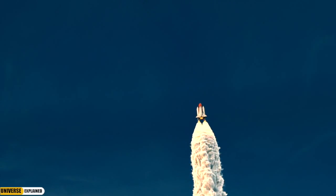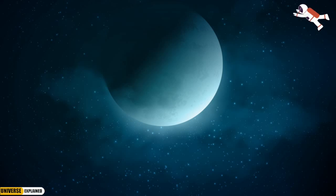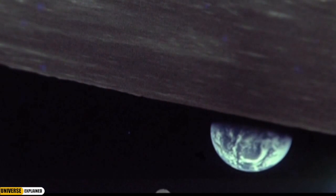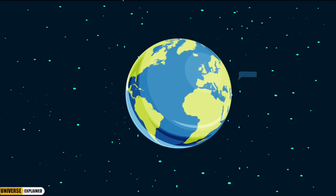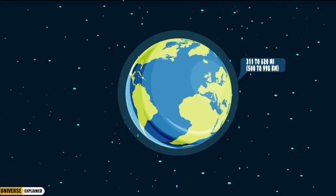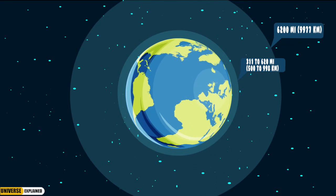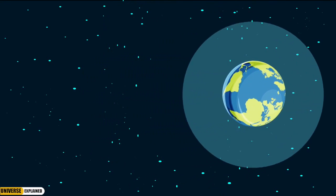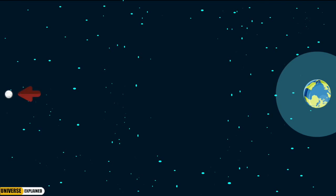No human except the 24 astronauts who visited the Moon in 1969 has ever traveled to this layer. This layer begins at 311 to 620 miles and ends at around 6,200 miles above sea level. The Moon is still hundreds of thousands of miles away from the edge of the exosphere.